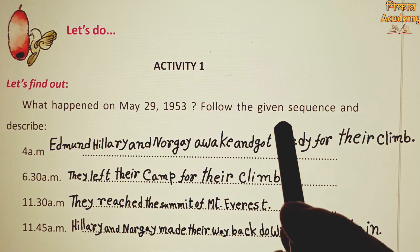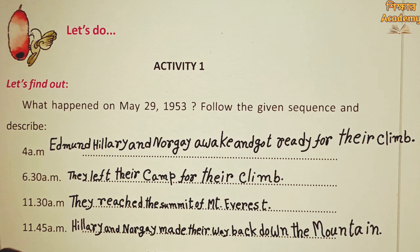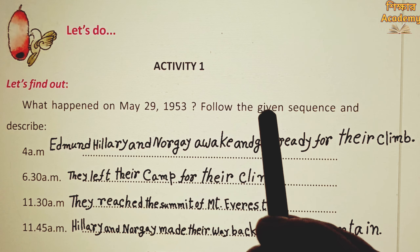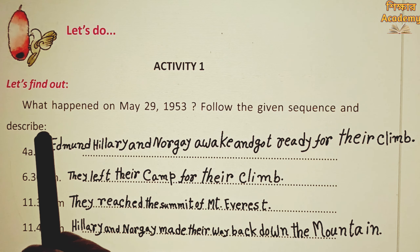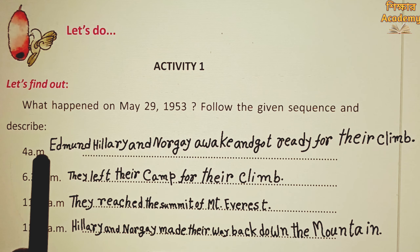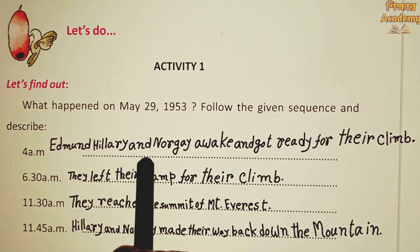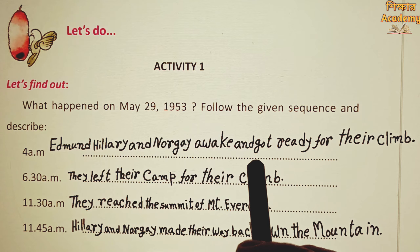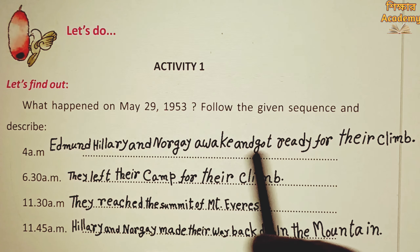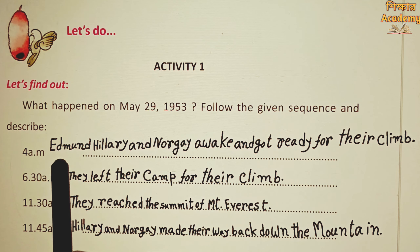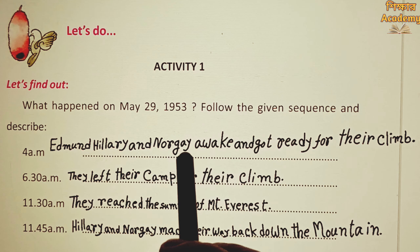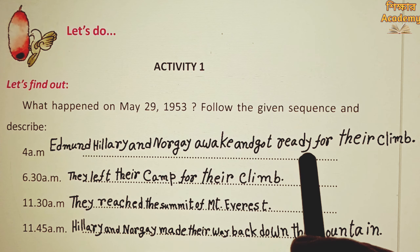Follow the given sequence and describe. The first step: at 4AM, Edmund Hillary and Norgay arrived and got ready for their climb.